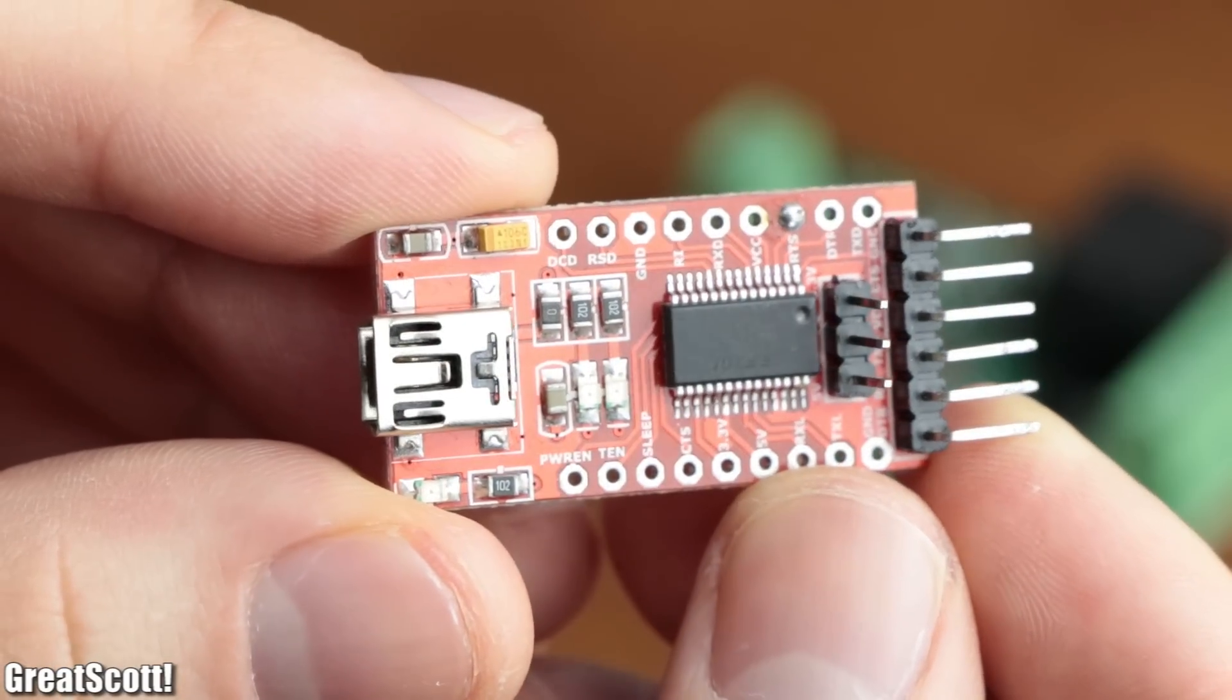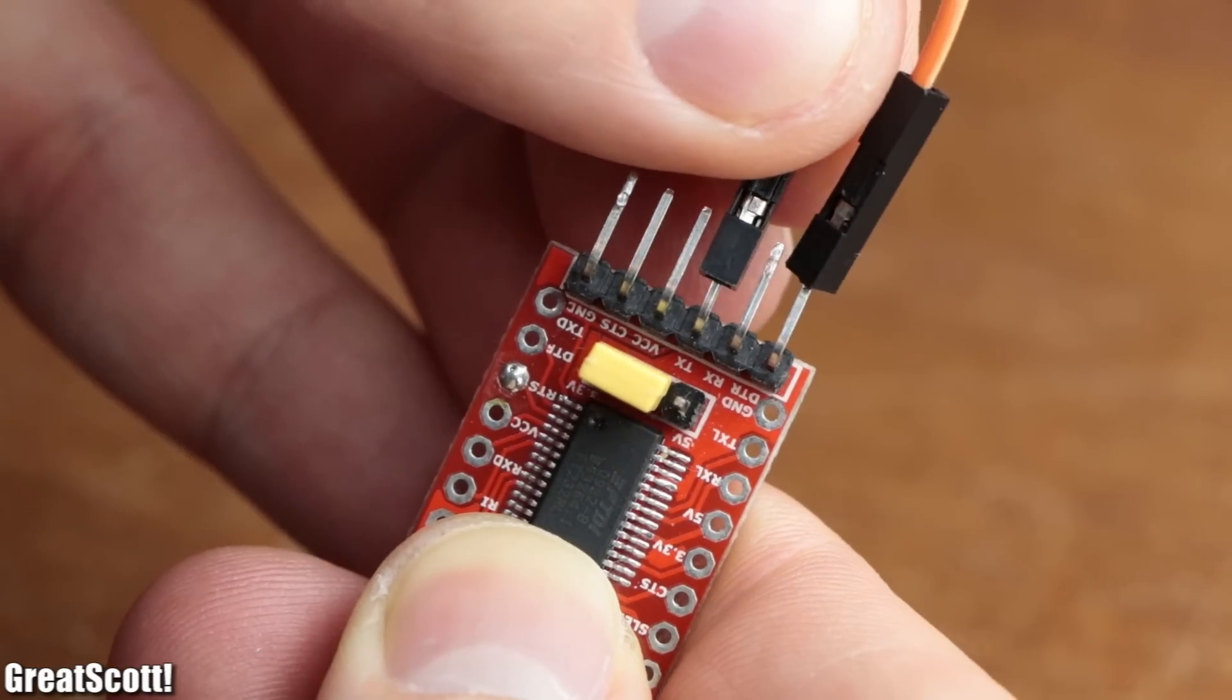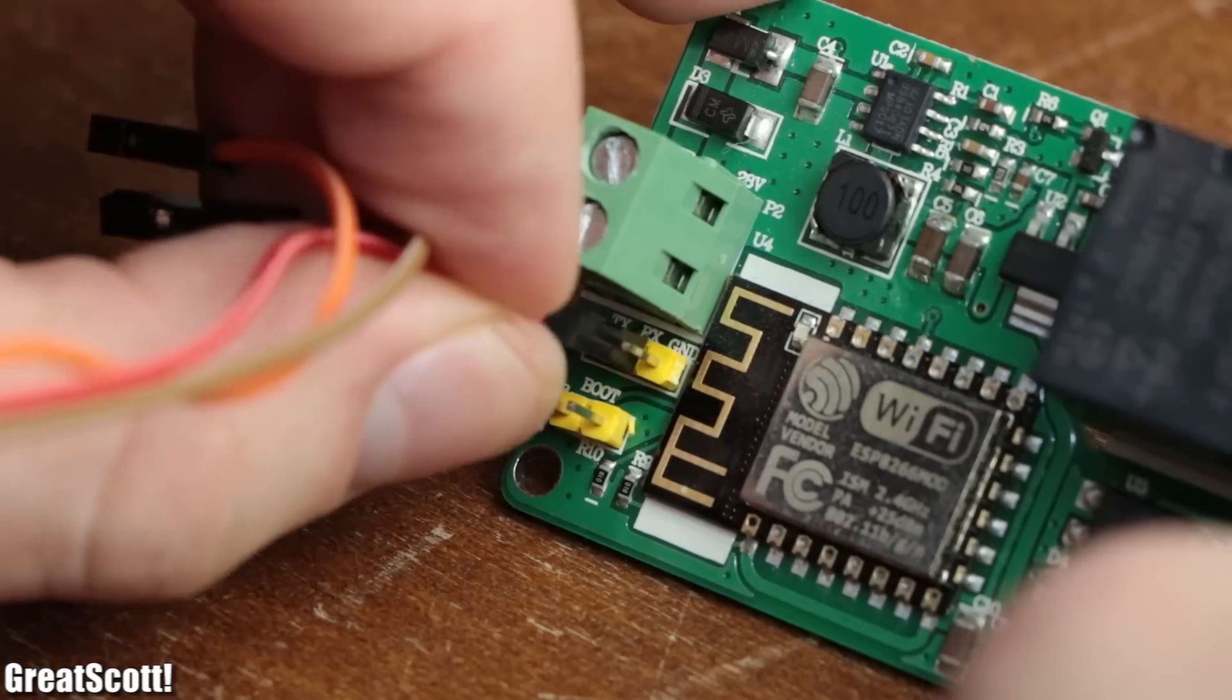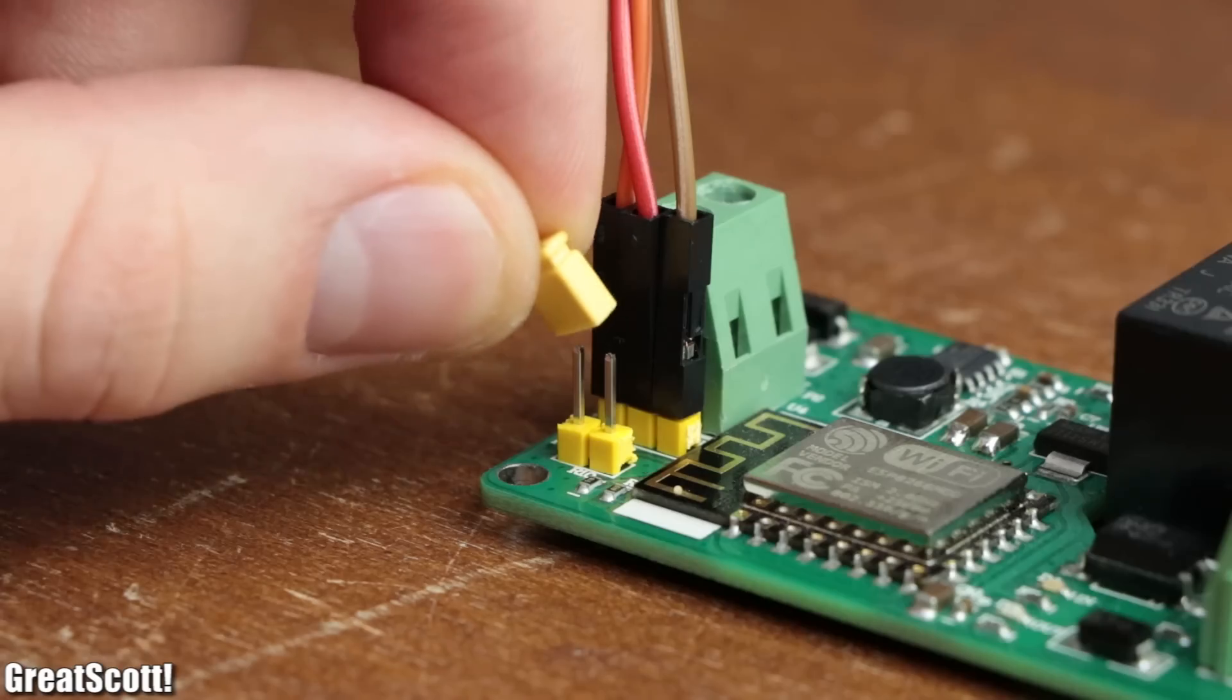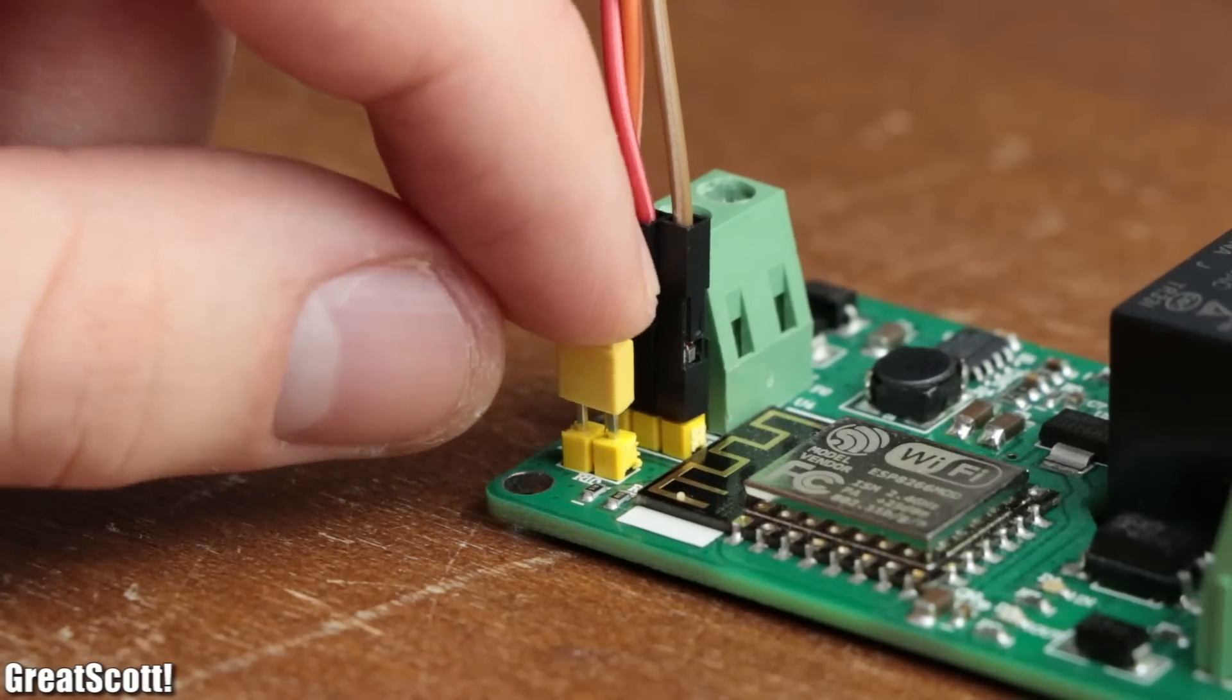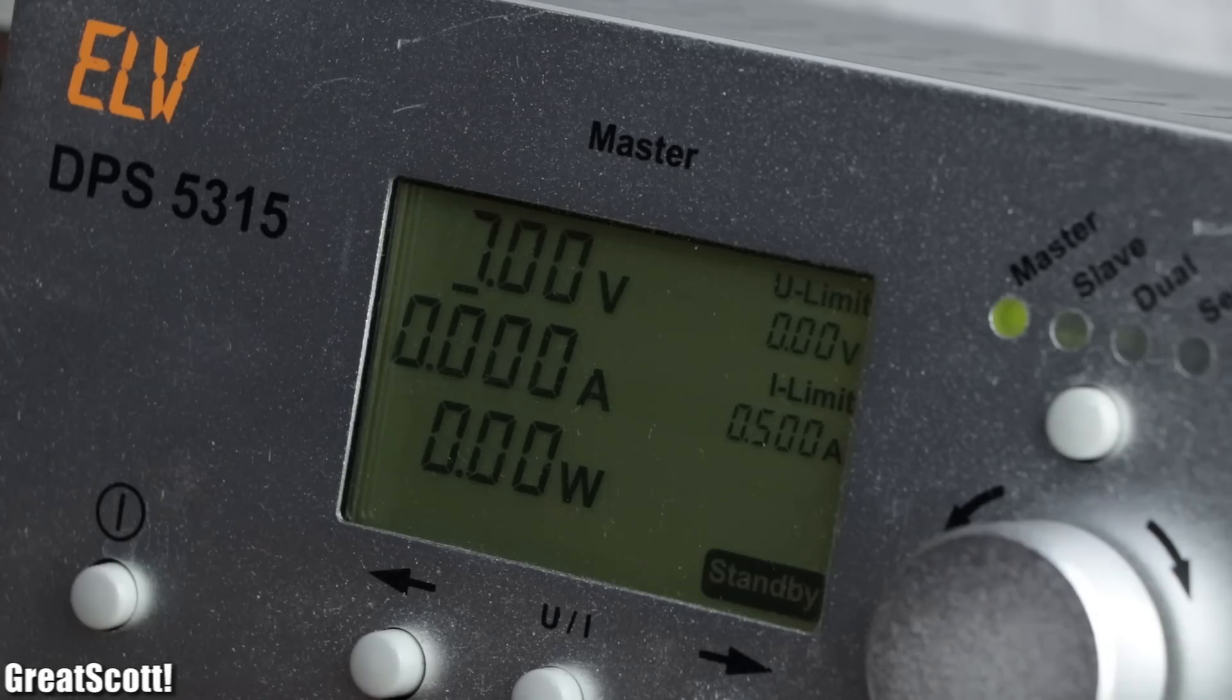Then I grabbed a USB to serial converter set to 3.3 volts and connected its TX pin to RX, RX to TX, and ground to ground. Afterwards I shortened the lower two pins with a jumper and connected the boards to a power supply set to at least 7 volts.